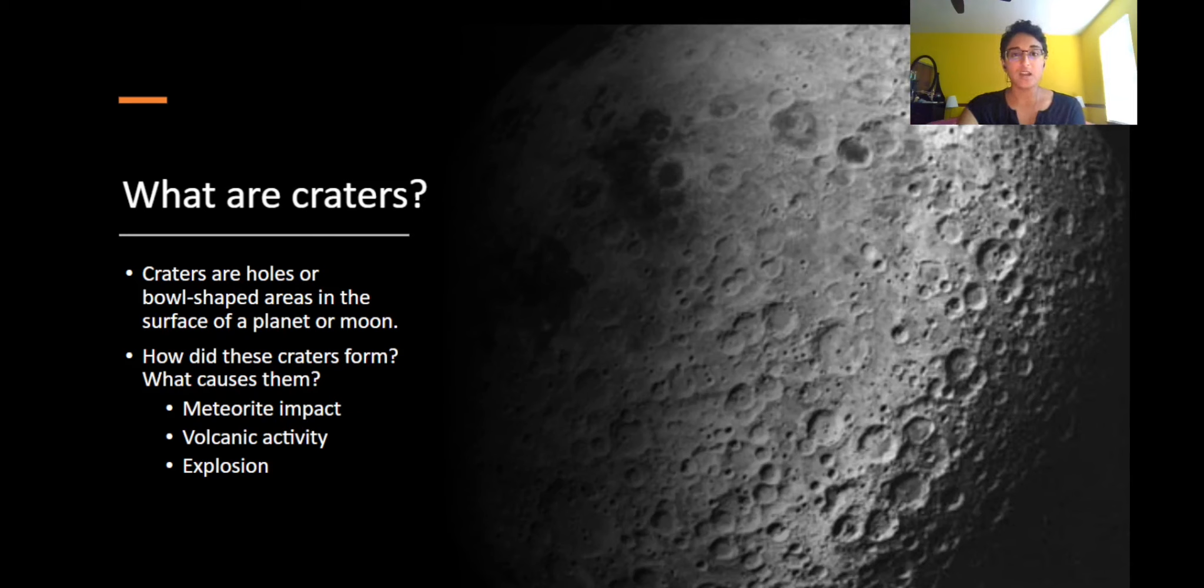Let's start off by asking, what are craters? You may have heard the word before, but craters are bowl or hole-shaped indents on the surface of a planet or moon. Take a look at this picture of the moon on the screen. Can you see the little craters? There are a bunch of them. But how did these craters even form in the first place?